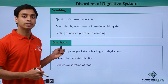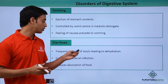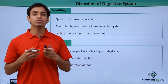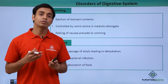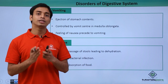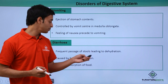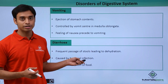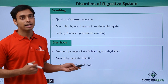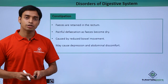The next very common type of disease is diarrhea. Diarrhea is the frequent passage of stool that can lead to dehydration, because too much water content is passed out, reducing the water content of the body. It is mostly caused by bacterial infections and also reduces the absorption of food.